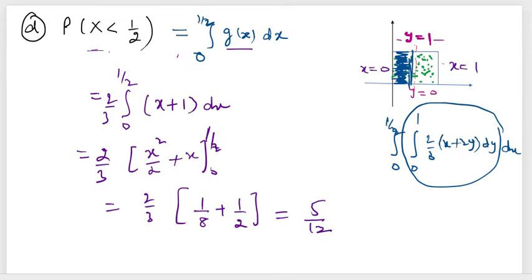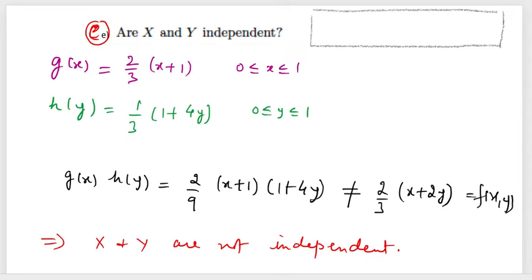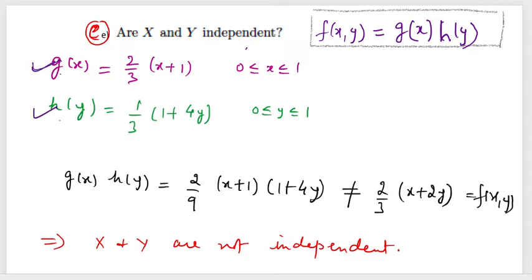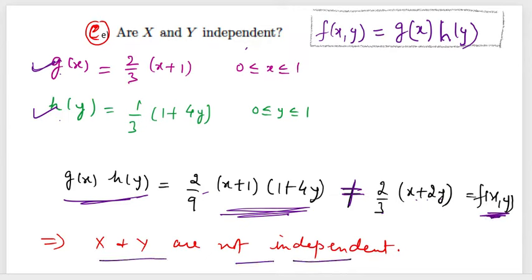The last part is to check if x and y are independent. For independence we check if f(x, y) equals g(x) · h(y). Taking the product of g(x) = (2/3)(x + 1) and h(y) = (1 + 4y)/3, after simplification the expression does not equal the original joint density function (2/3)(x + 2y). Therefore, x and y are not independent.